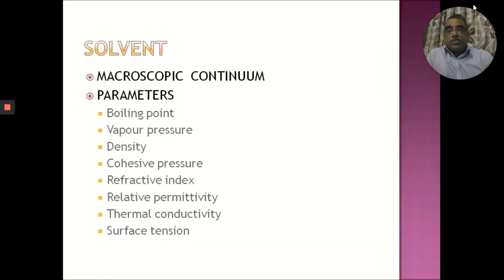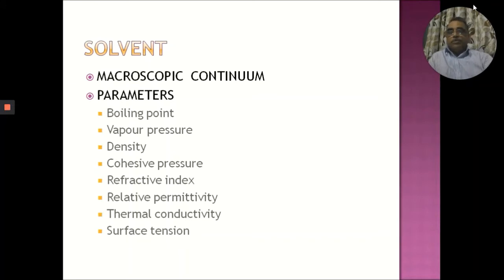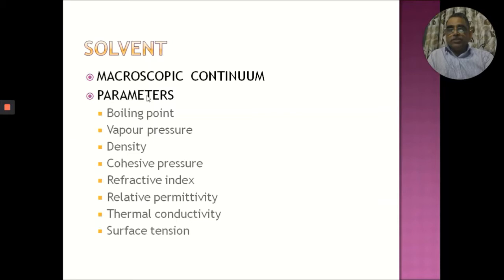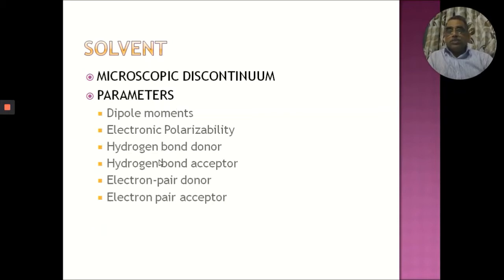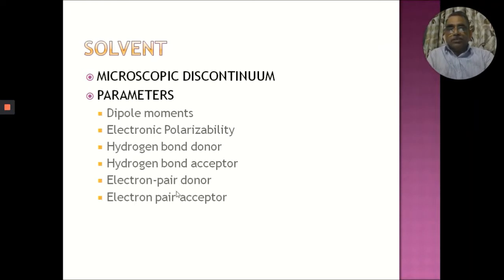Let us begin with the solvent parameters. There are two classes of parameters. Macroscopic continuum parameters, which include boiling point, vapor pressure, density, cohesive pressure, refractive index, relative permittivity, thermal conductivity, and surface tension. The next class are microscopic discontinuum parameters: dipole moments, electronic polarizability, hydrogen bonding donor, hydrogen bonding acceptor, electron pair donor, and electron pair acceptor. These are the properties we have to understand.